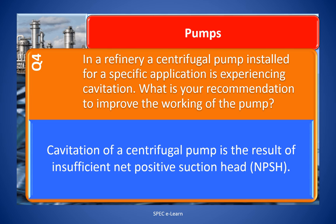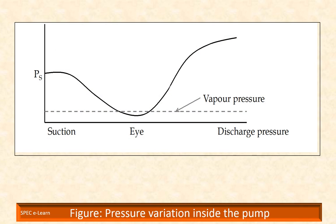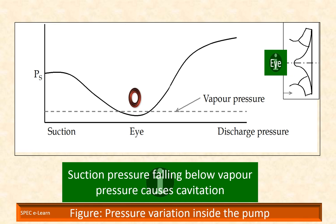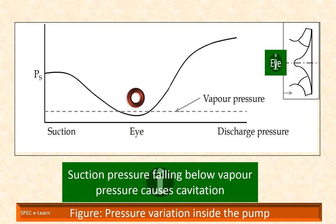Cavitation of a centrifugal pump is a result of insufficient net positive suction head (NPSH). Suction pressure falling below the vapor pressure causes cavitation. This figure illustrates how the pressure varies from the suction line to the eye of the impeller. As the liquid passes from suction to the eye of the impeller, the velocity increases and the pressure decreases. There are also pressure losses due to shock and turbulence as the liquid strikes the impeller. Centrifugal force of the impeller vanes further increases the velocity and decreases the pressure. All these pressure losses contribute to a drop in system pressure at the impeller eye, and bubble formation is a possibility if the net suction head is not sufficient.